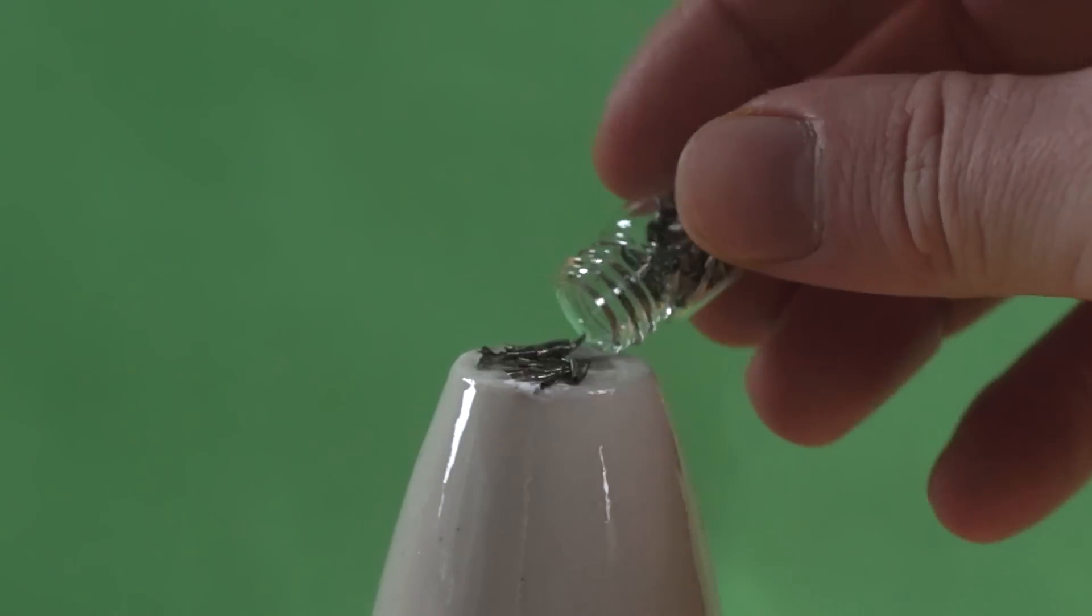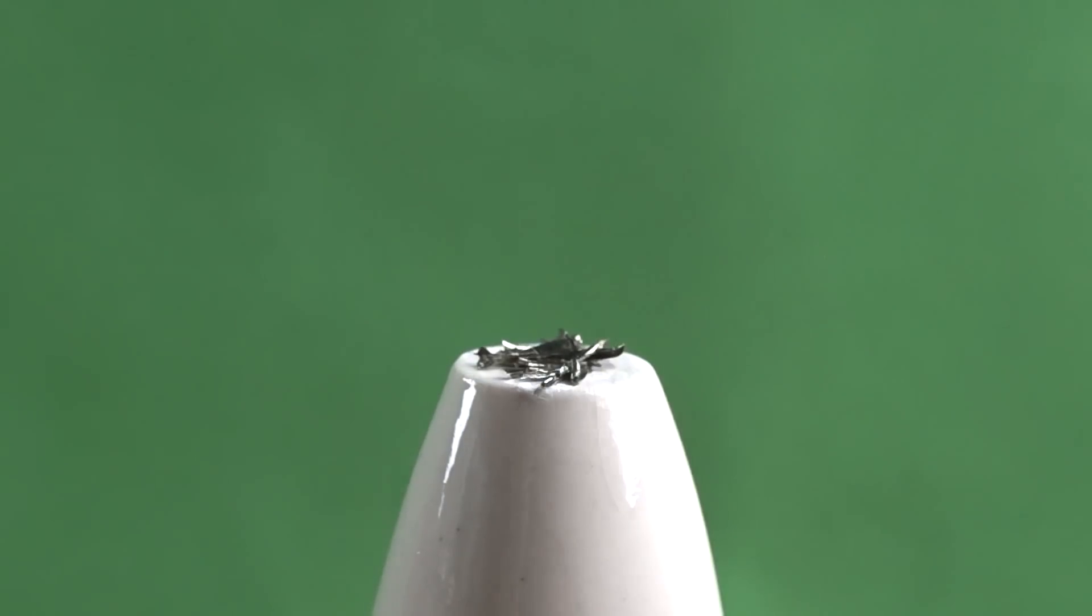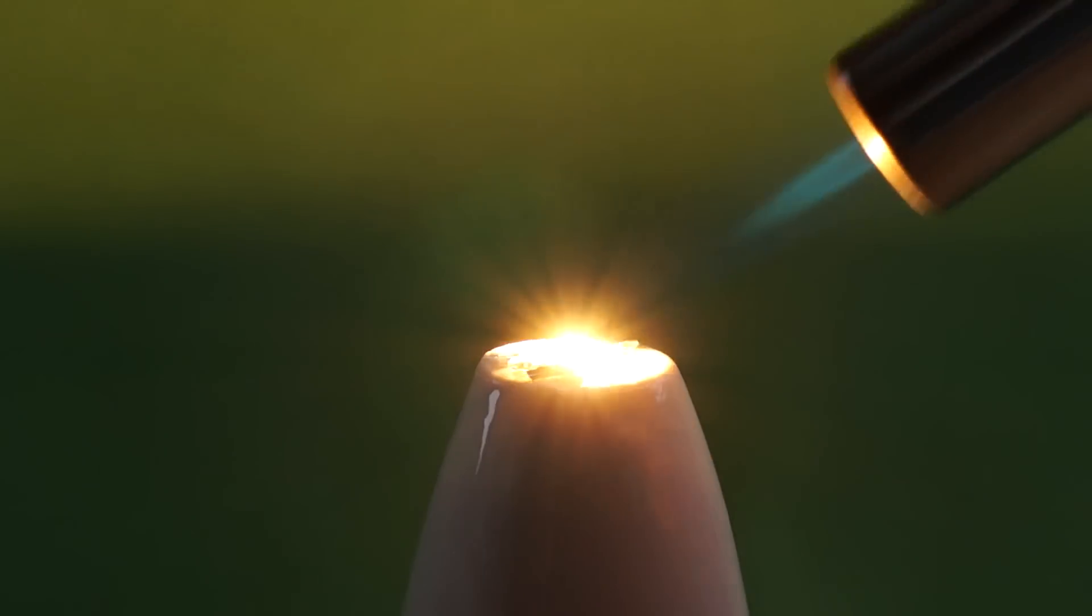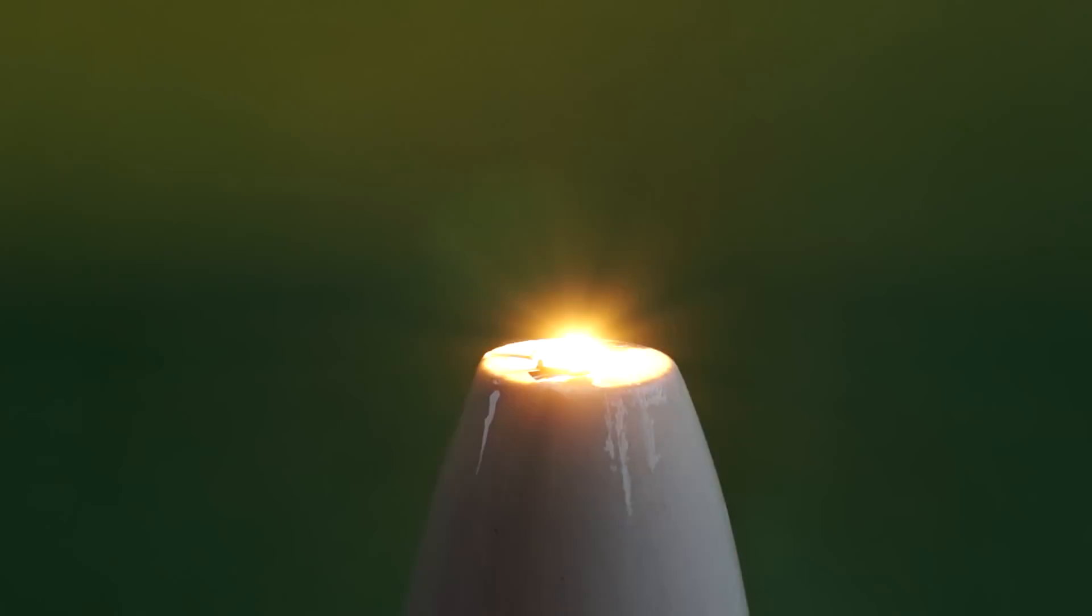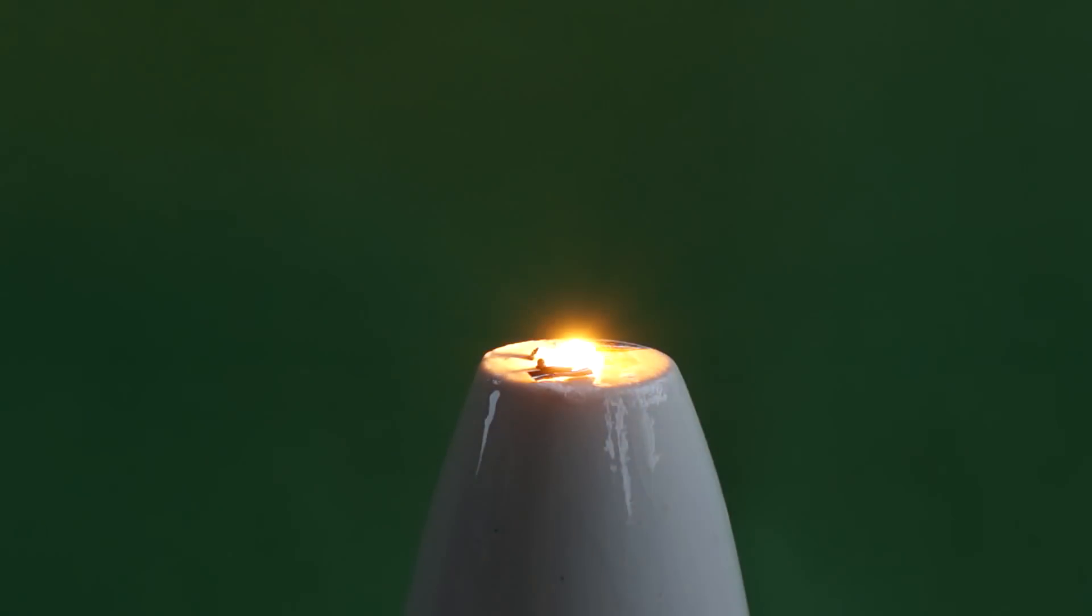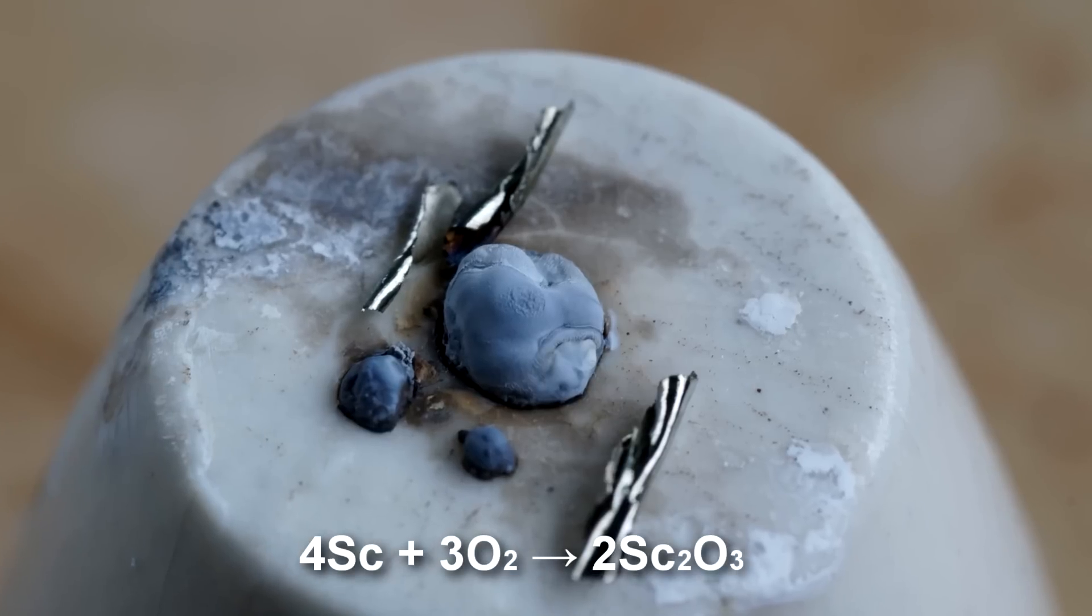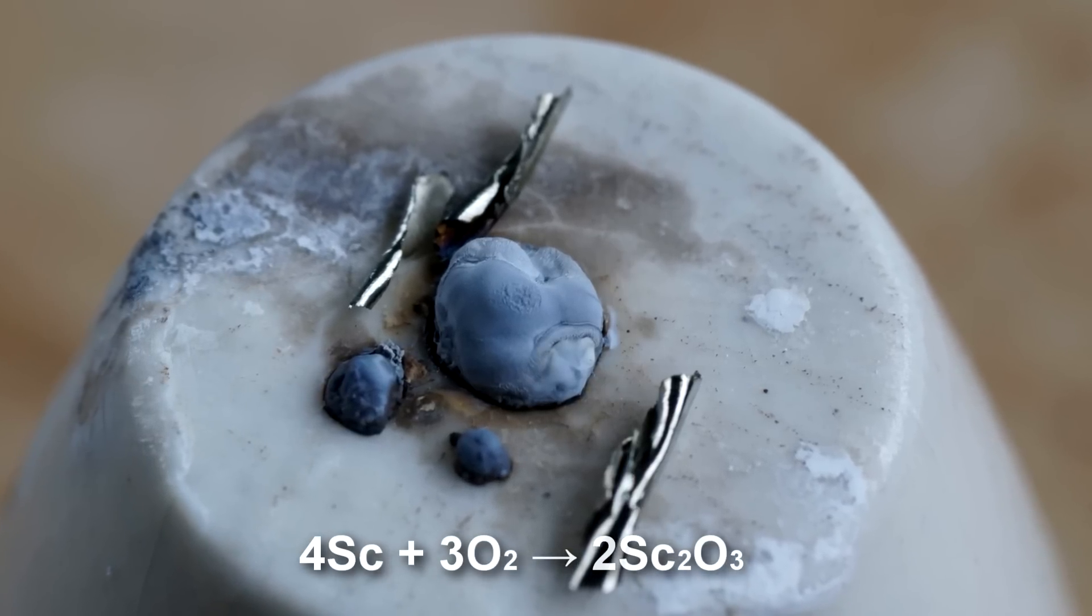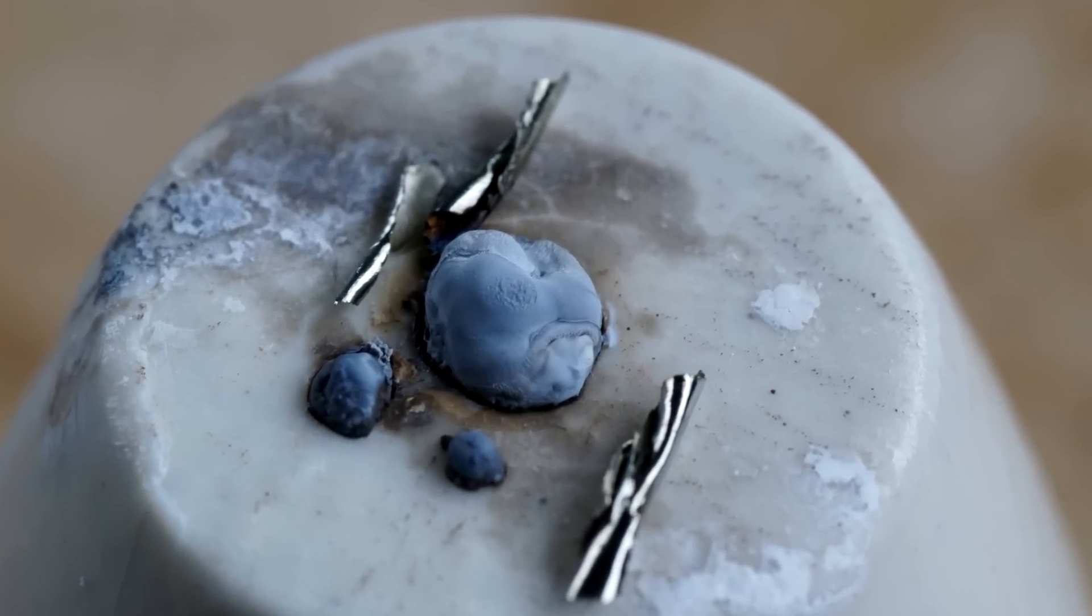By its chemical properties, scandium resembles aluminum and lanthanides. Chips of scandium burn well in the air, and during combustion you can hear this interesting raspy sound. From the heat of the reaction, the scandium oxide produced melts and forms into a bowl.